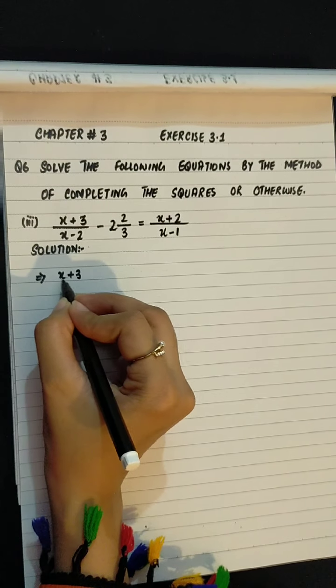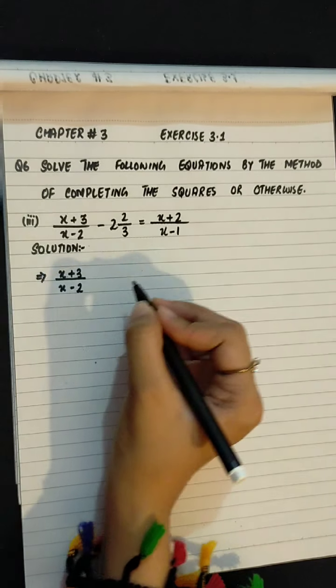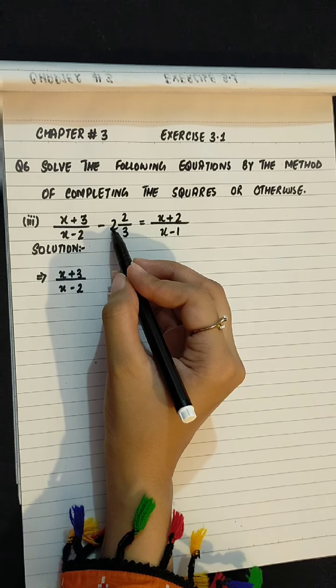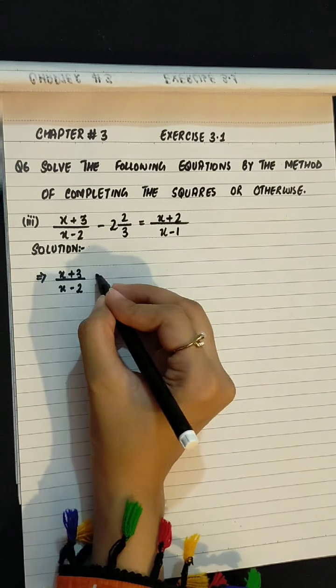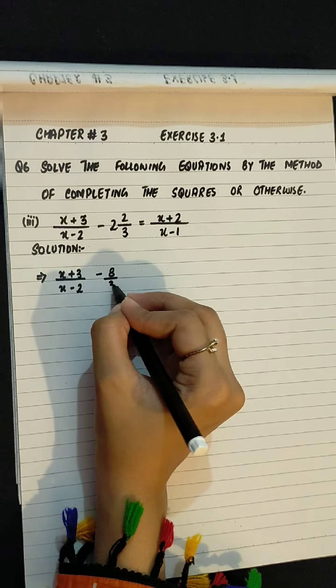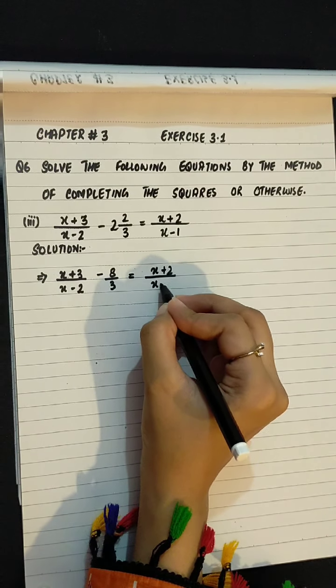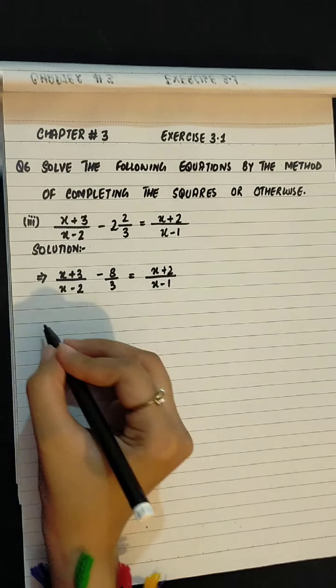x plus 3 divided by x minus 2. We will convert this compound fraction. 3 times 2 is 6, 6 plus 2 minus 8 over 3 equals to x plus 2 divided by x minus 1.